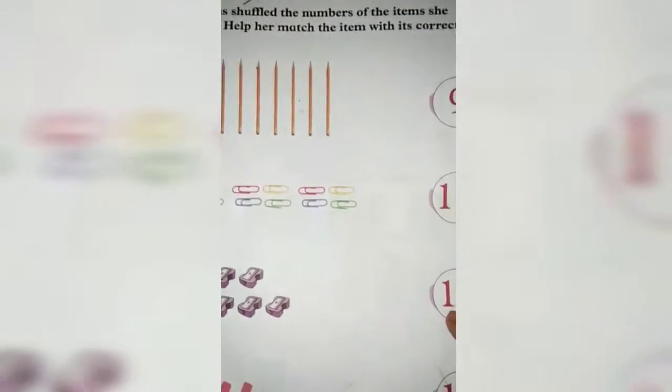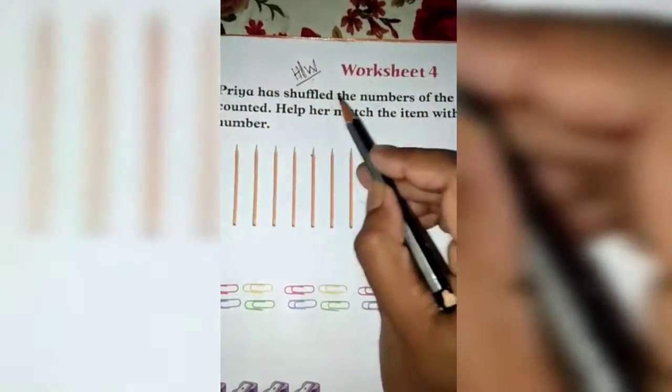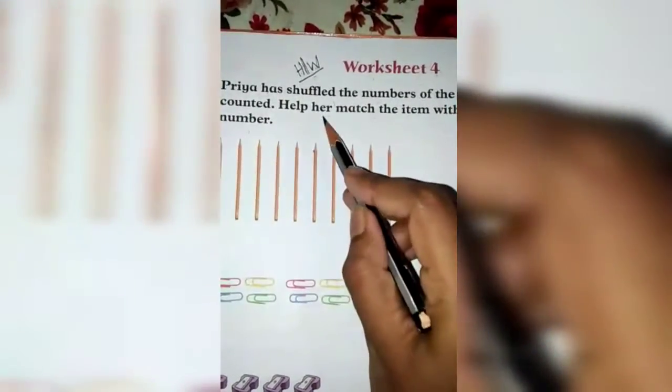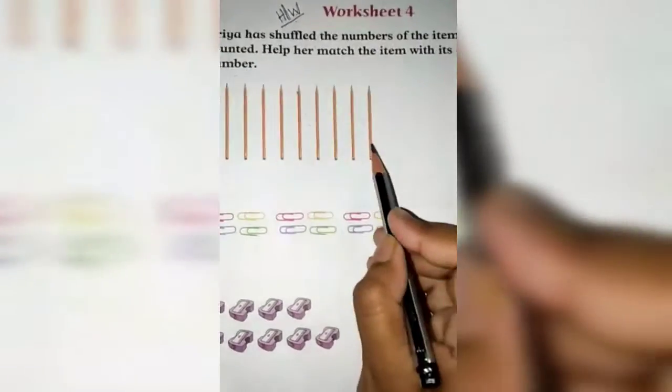Worksheet 4, Team 3 Application Book, page number 26, Worksheet 4. Here you see the question: Priya has shuffled the numbers of the items she counted. Help her match the item with its correct number. So these are some items and these are numbers, so you have to count the items and match with the correct number.